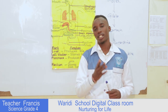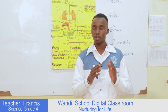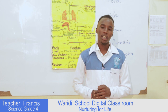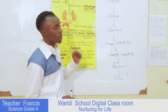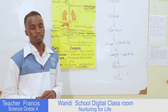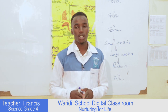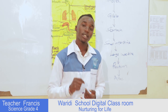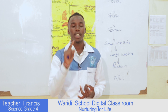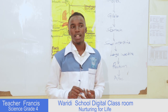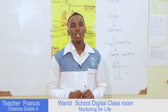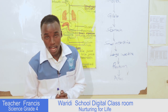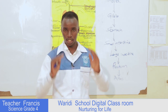Hi everyone, this is Teacher Francis, Grade 4. I'm going to take you through science and technology. Our main topic today is the human digestive system. It consists of three main parts: number one, the alimentary canal; number two, the liver; and number three, the pancreas. Those are the three main parts of the human digestive system.